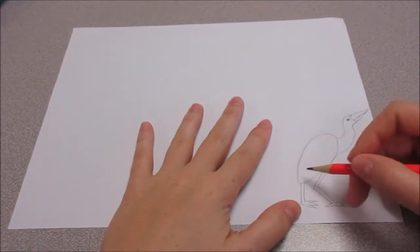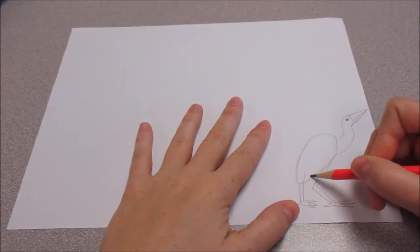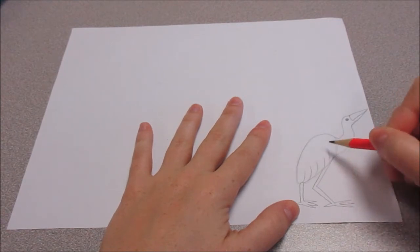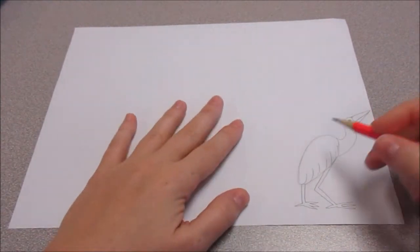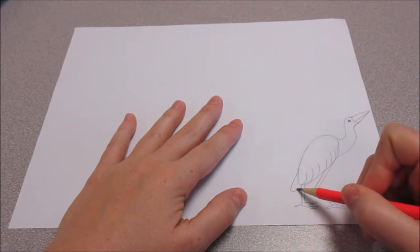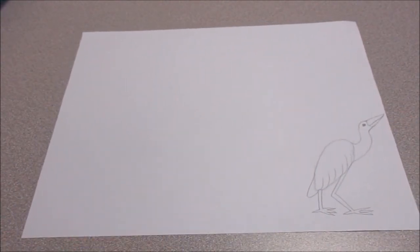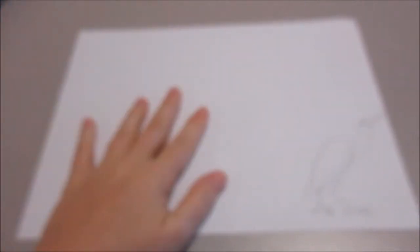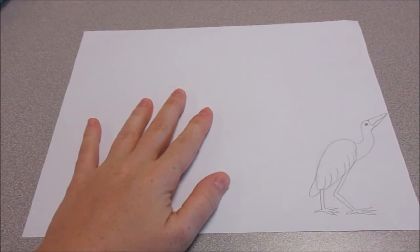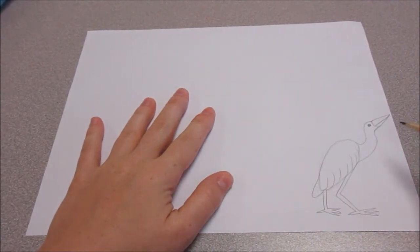I want to make it a little more detailed. So I'm going to add some curved lines to show that it has feathers. And a little bump here for the tail. Now I'll come back.